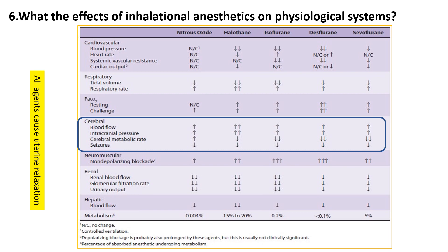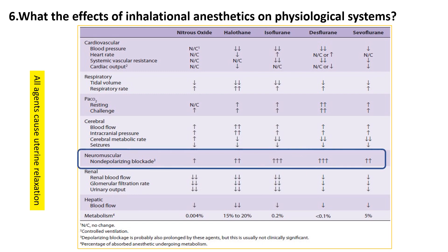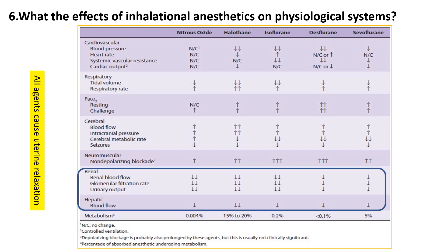Neuromuscularly, these agents potentiate non-depolarizing blockers, most strongly with isoflurane and desflurane. Renal parameters like blood flow and filtration rate decrease under all anesthetics. Hepatically, halothane causes the most significant blood flow reduction and carries the highest hepatitis risk due to its substantial metabolism, compared to minimal metabolism with other agents. However, clinically their effects can change in magnitude depending on the dose used and the use of concurrent intravenous anesthetics.